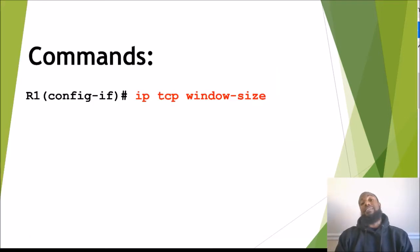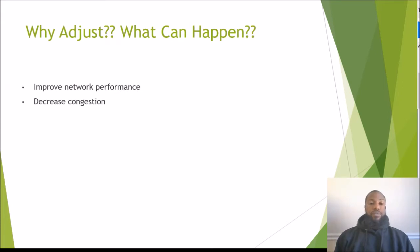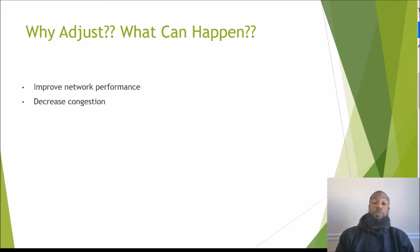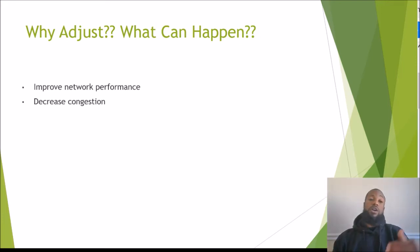In Cisco IOS, you can use the 'ip tcp' command to set a static window size value. You log into the router, go into interface configuration mode, and put that command under the interface you want to configure it on. You would adjust this to improve network performance — either slowing it down if you're sending too much, or speeding it up.